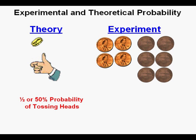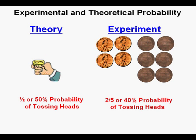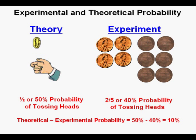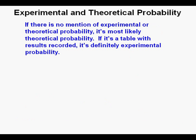But when we did the experiment, making ten attempts, we got four heads and six tails. So that will be a two-fifths or 40% experimental probability of tossing heads. We can say there is a 10% difference between the theoretical and experimental probabilities. If there is no mention of experimental or theoretical probability, it's most likely theoretical. If it's a table with results recorded, it's definitely experimental probability.